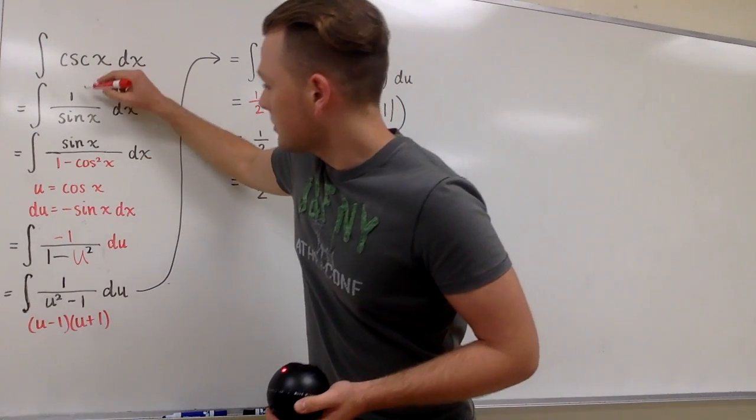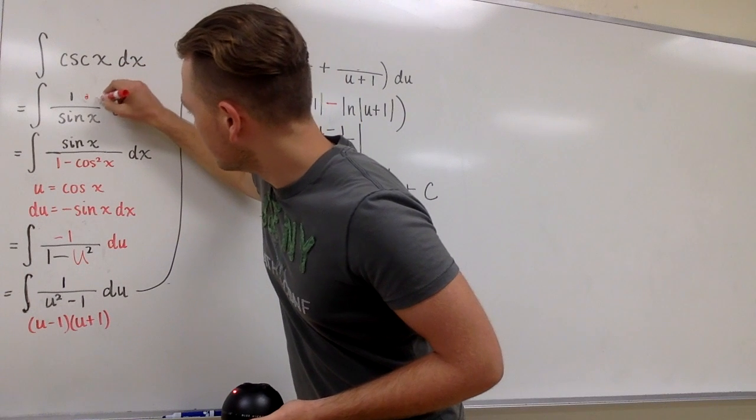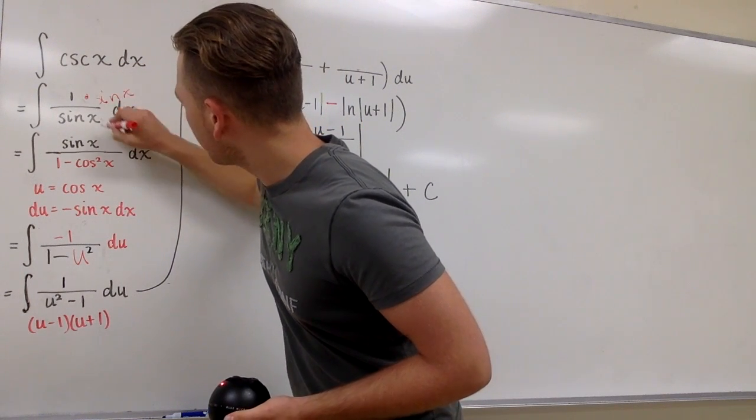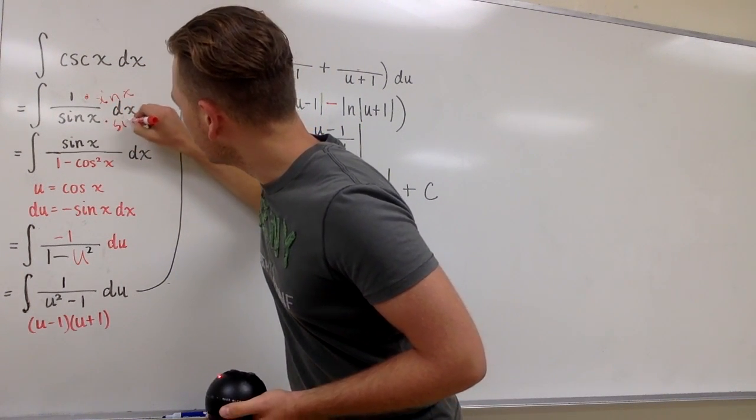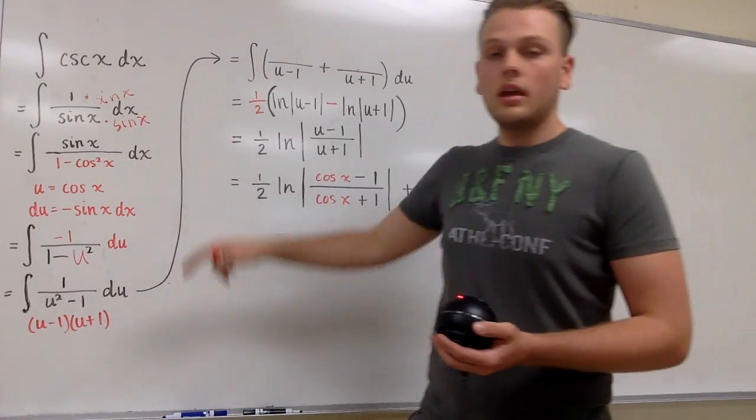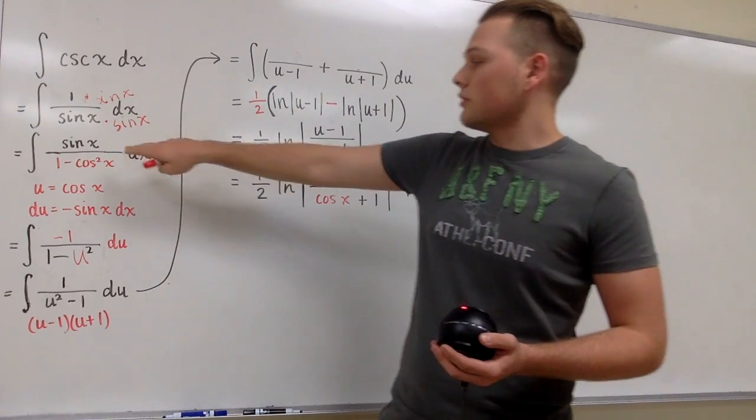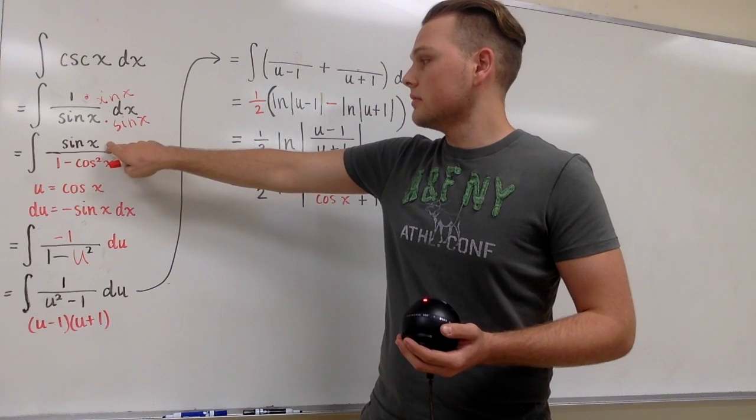Then I'm going to do something that may go against your intuition and that is multiply the top and bottom by sine x. By doing that we'll be left with sine x on top and sine squared on bottom.